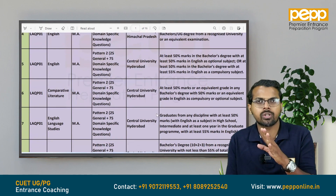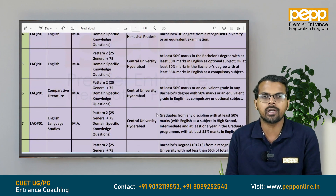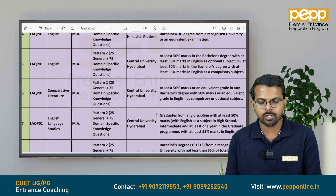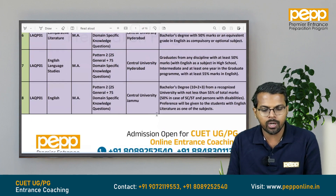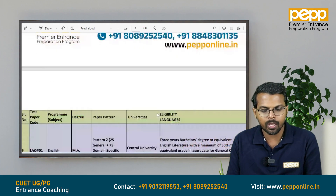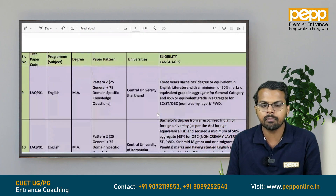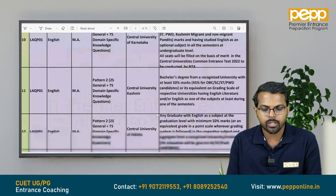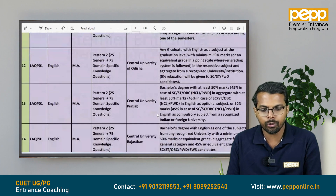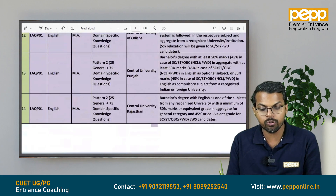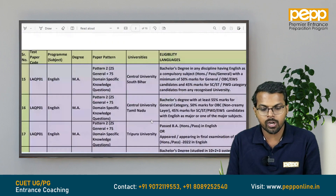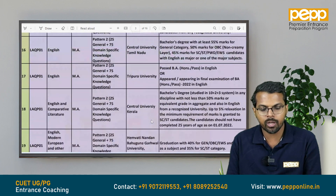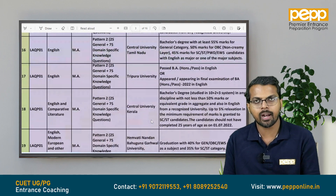Central University of Hyderabad, Central University of Jammu, Central University of Chandigarh, Central University of Karnataka, Kashmir, Central University of Odisha, Central University of Punjab, Central University of Rajasthan, Central University of South Bihar, Central University of Tamil Nadu, Tripura University, Central University of Kerala.